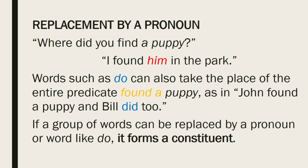The second test is replacement by a pronoun. Pronouns can substitute for natural groups. In answer to the question 'Where did you find a puppy?' a speaker can say 'I found him in the park.' Words such as 'do' can also take the place of the entire predicate 'found a puppy,' as in 'John found a puppy and Bill did too.' If a group of words can be replaced by a pronoun or word like 'do,' it forms a constituent.